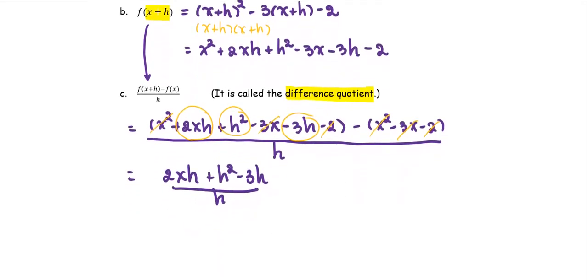All three terms of the numerator have a common factor h, so we can factor it out to get h multiplied by 2x plus h minus 3 divided by h.